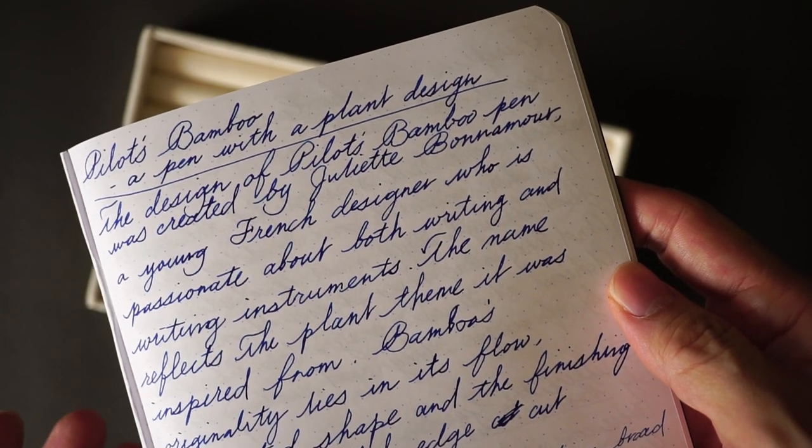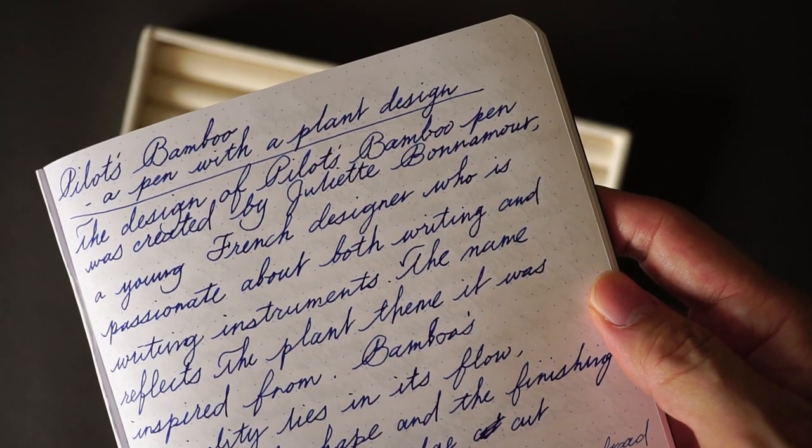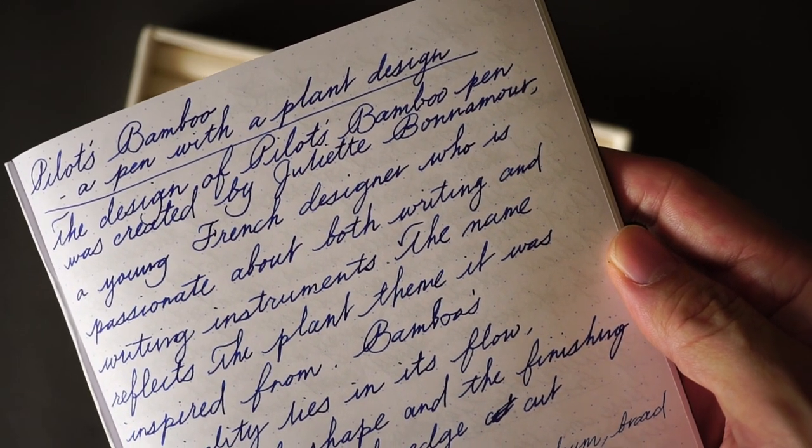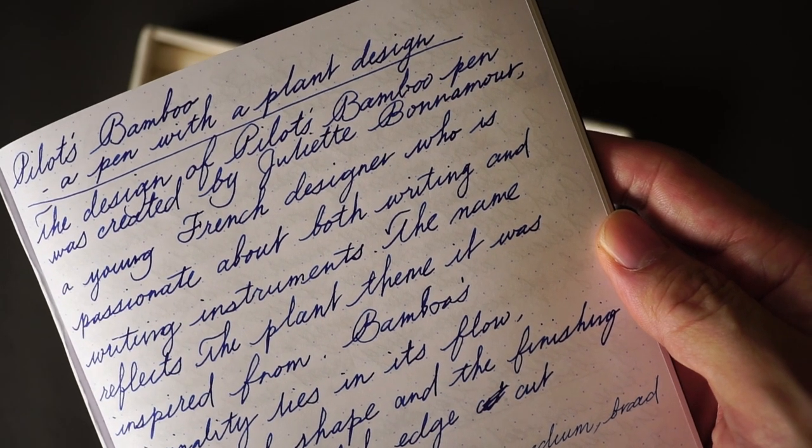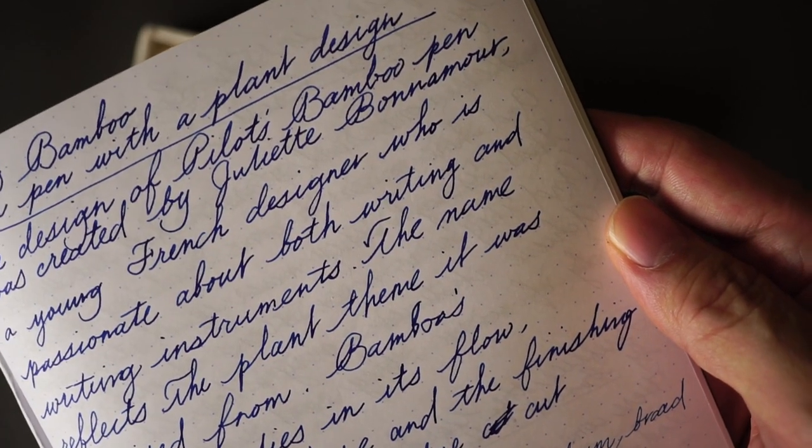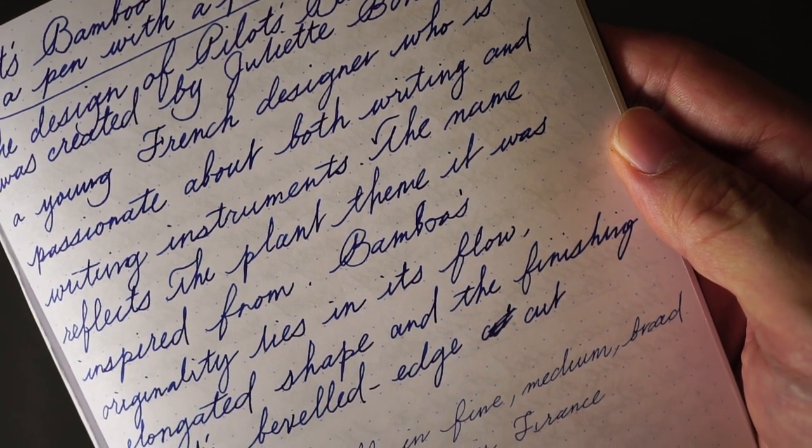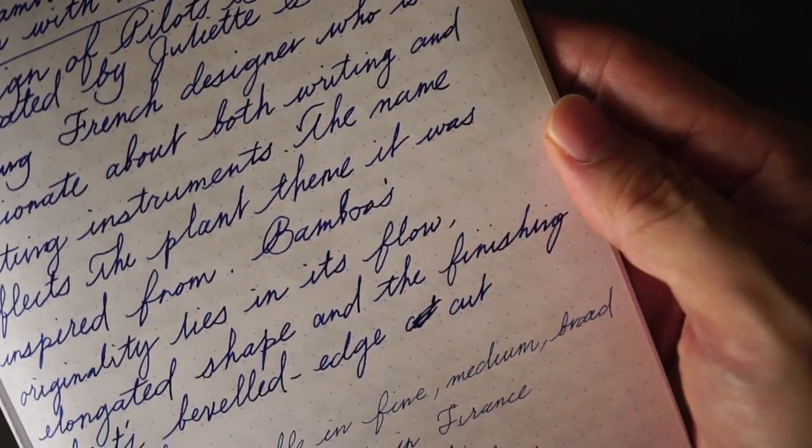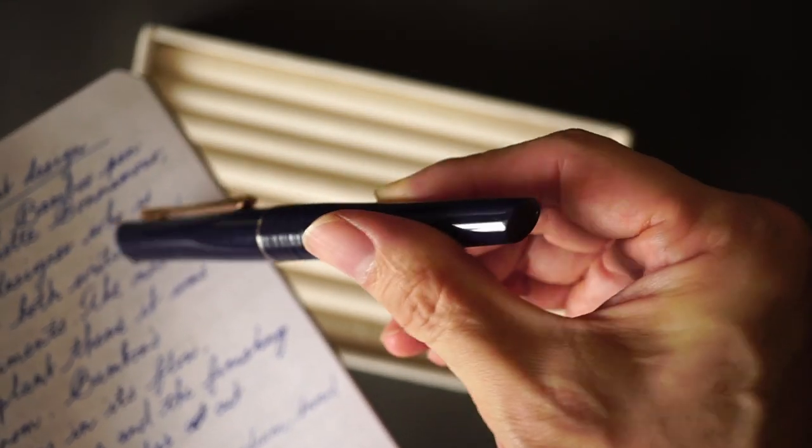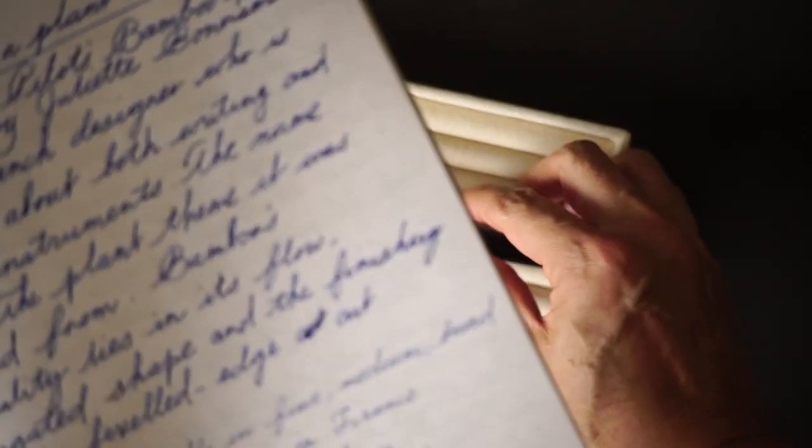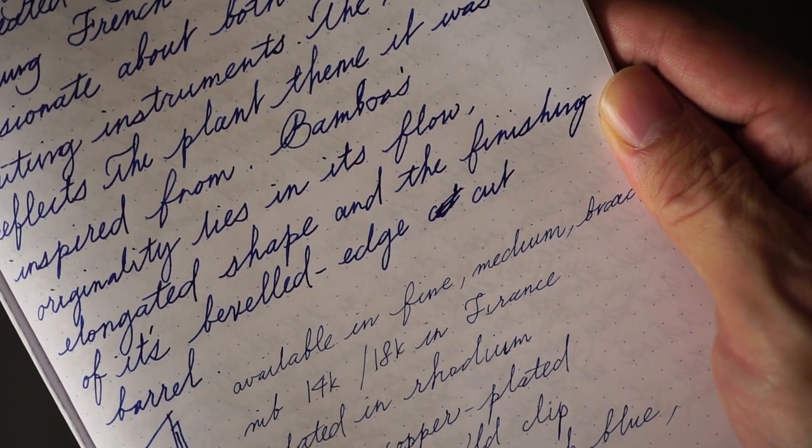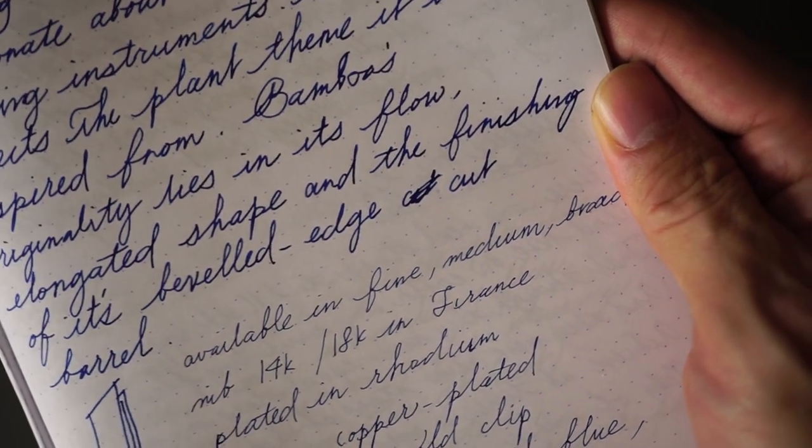Basically, it was a very innovative design when it came out, and it was a pen designed to have a plant design. I'm not going to read out all this text, but basically, the pen was designed by a French woman called Juliette Benamol. The shape of the pen obviously looks like a piece of bamboo that has been sliced on both ends by probably a very sharp knife, maybe a samurai knife. And basically, the bamboo's shape was inspired by that plant.